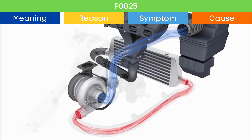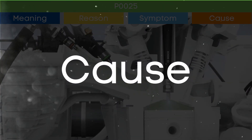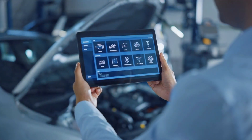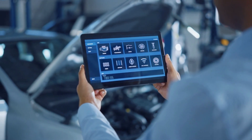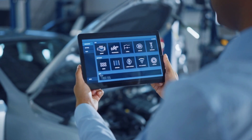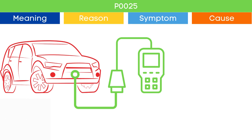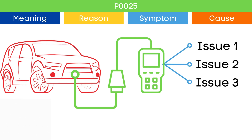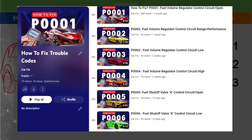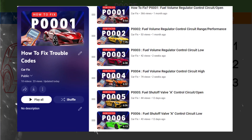Now that we understand the symptoms of P0025, let's delve into the causes. The P0025 code may be triggered due to several causes. To ensure the root cause, check other activated OBD2 codes, as they may indicate malfunctions in other engine management system components which may be the root cause of the P0025 code. You can find our playlist on the meaning and causes of each OBD2 code — link in the corner.